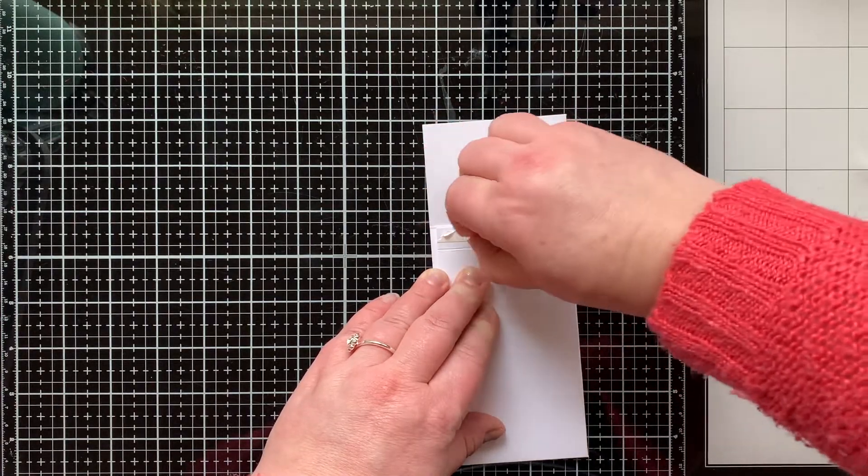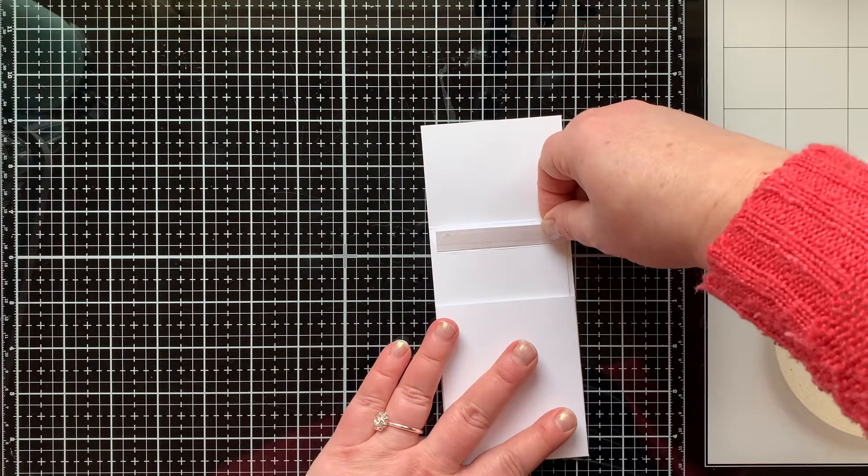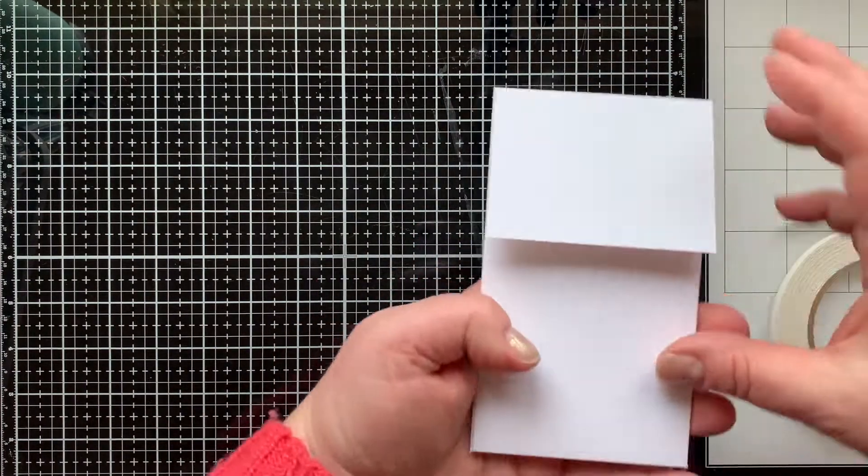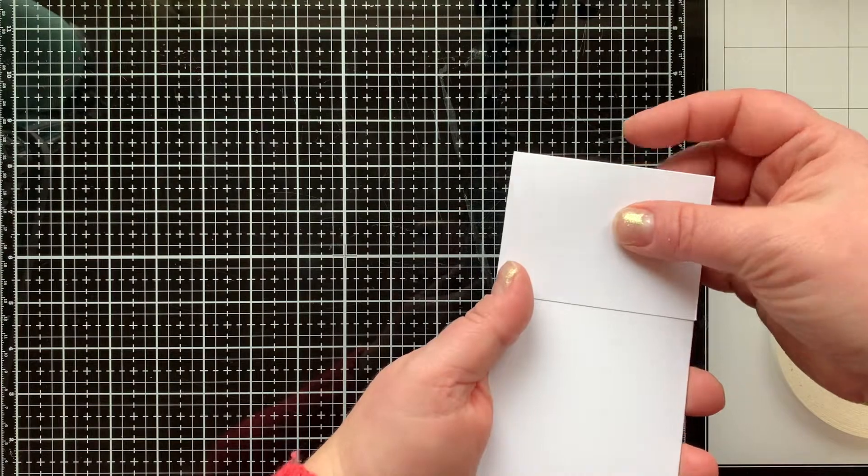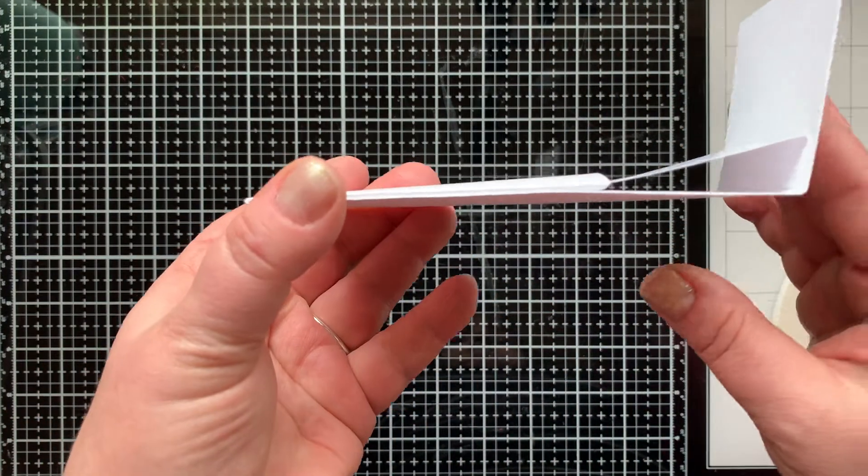And then once I make sure that it is centered in the pocket, I can close the top flap and pick up that adhesive. Now when I open and close this, it pulls that insert up and down out of the pocket. Pretty cool, very easy to do, right?